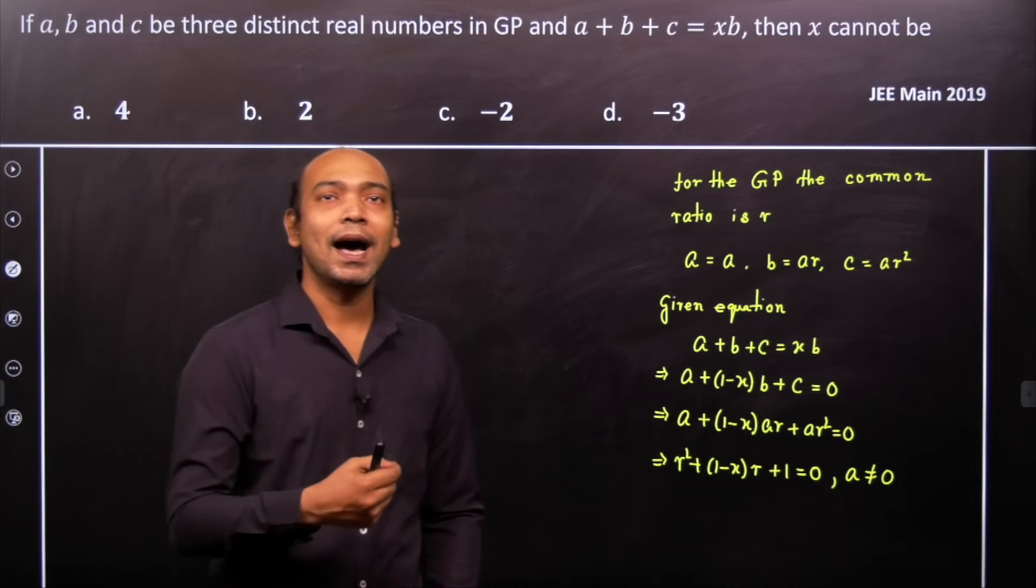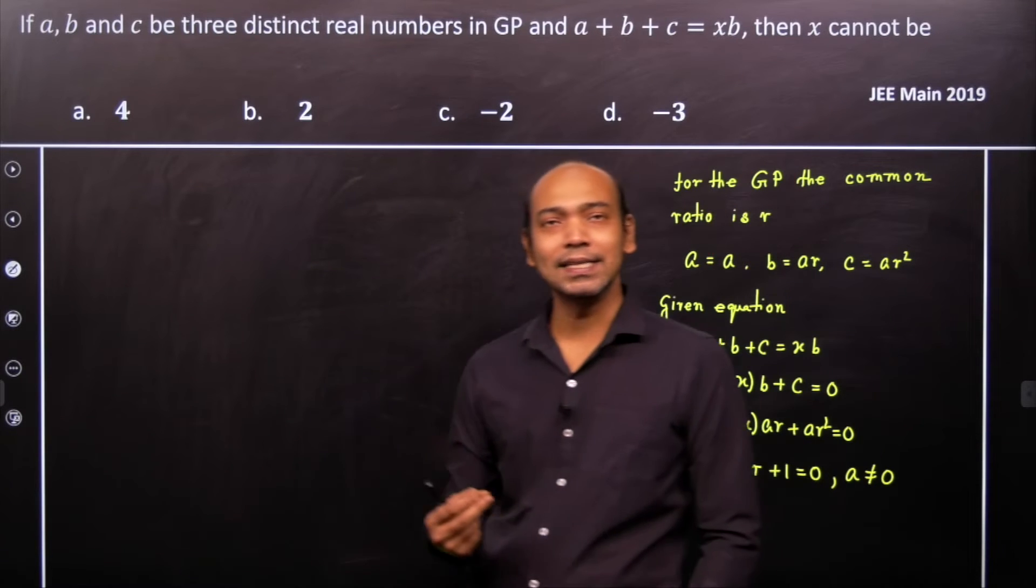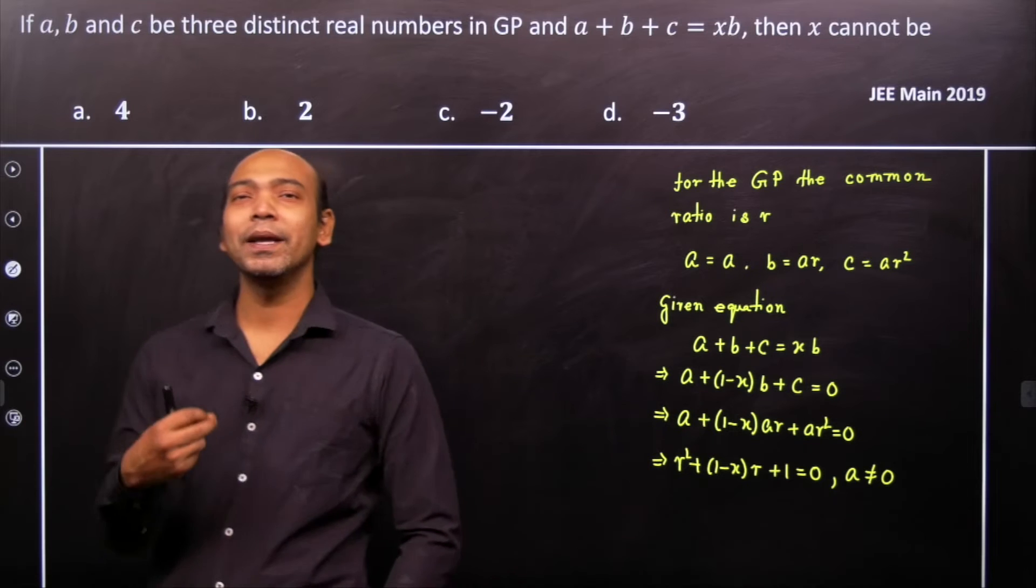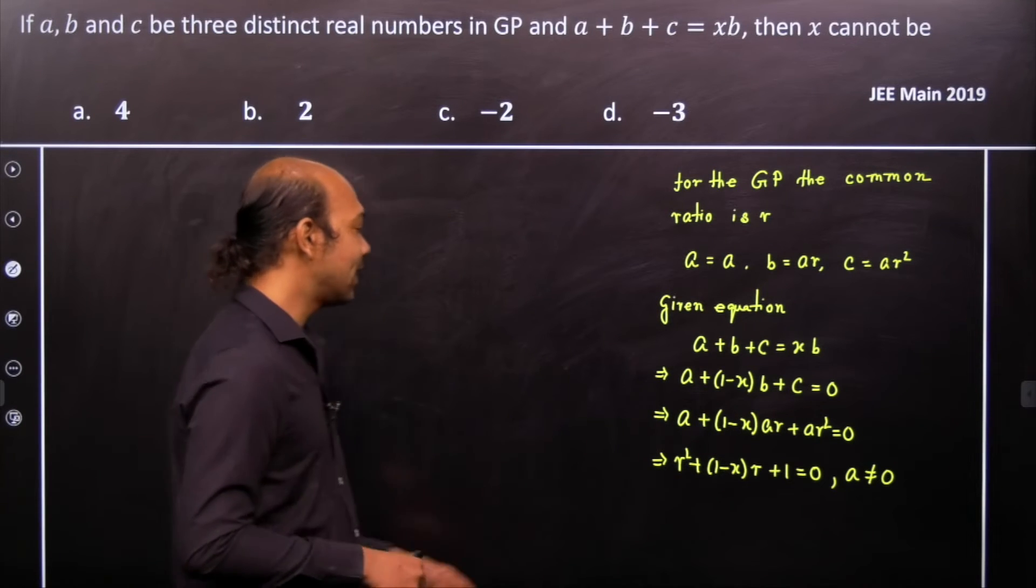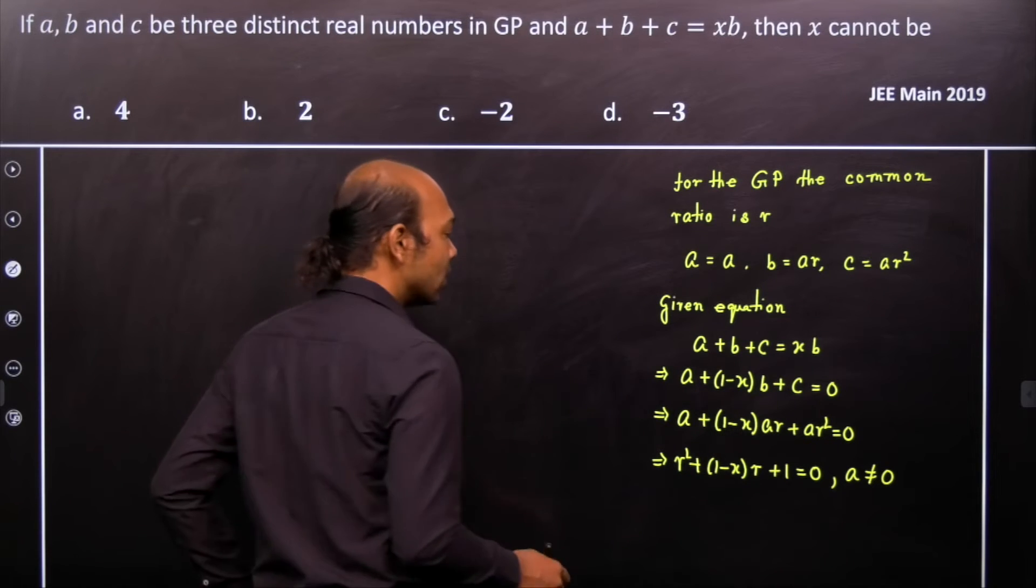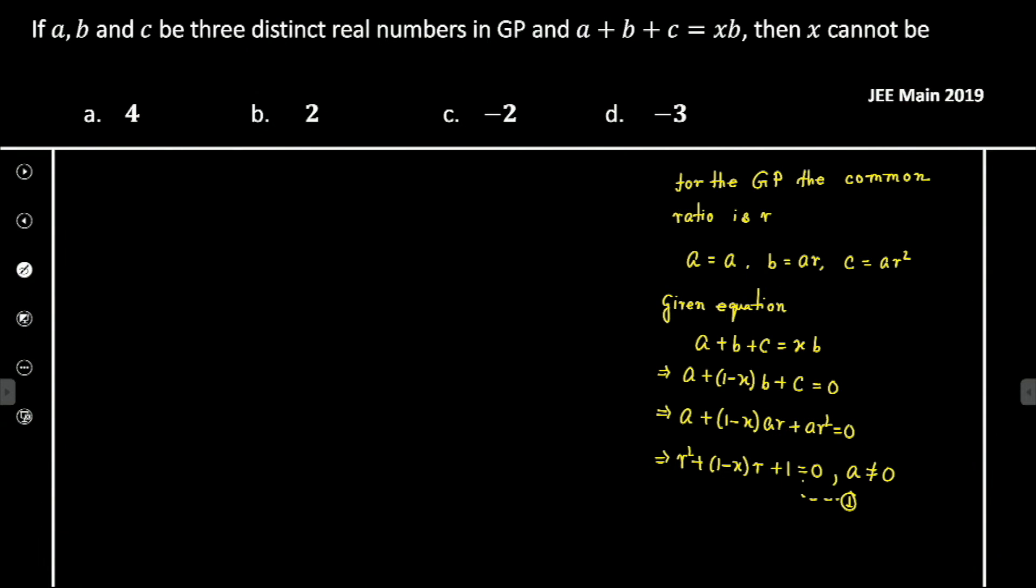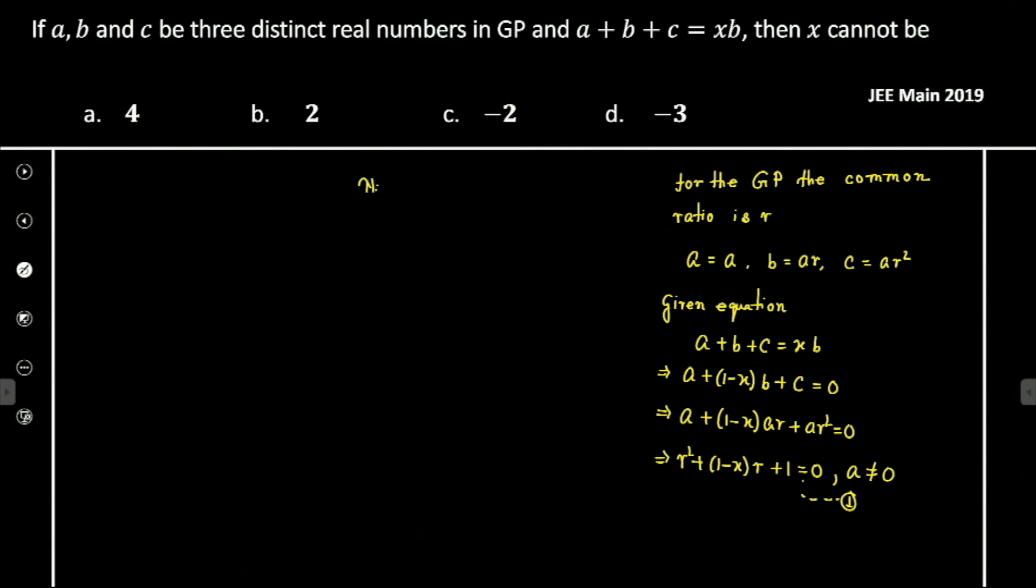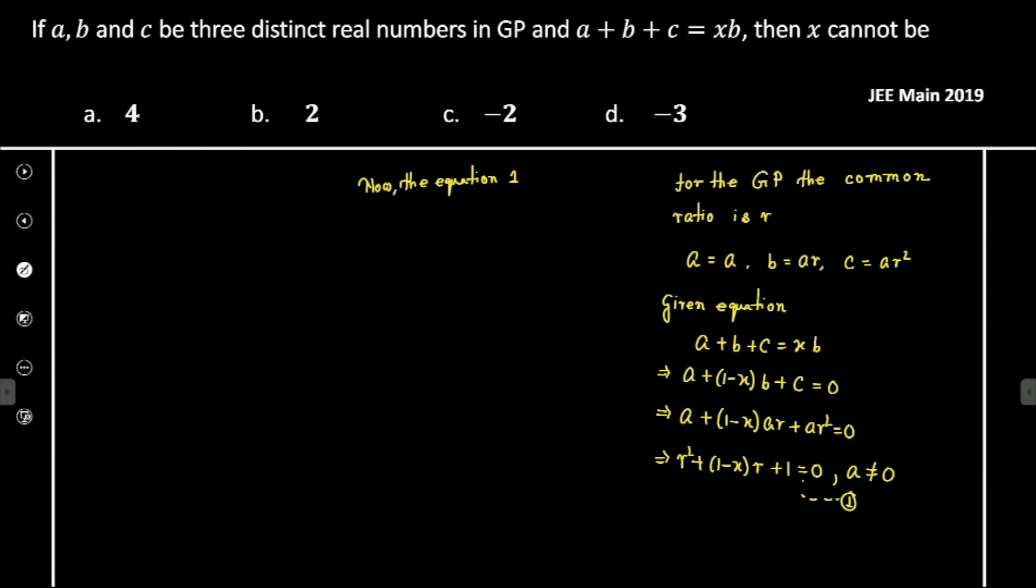Now, the equation must have real solutions because the common ratio cannot be complex in general in the GP. Therefore, we'll consider that this equation definitely has real roots. Let's name it equation number 1. So equation 1 must have real roots.